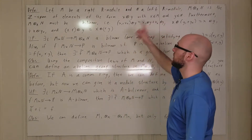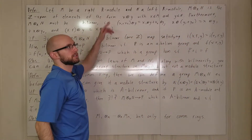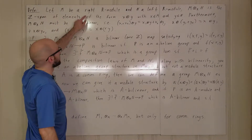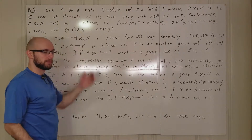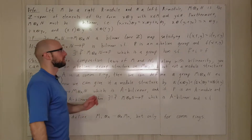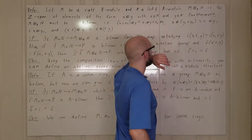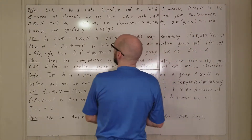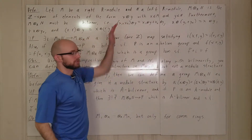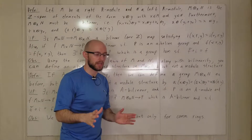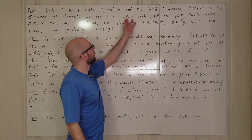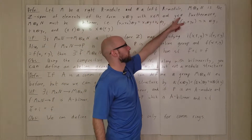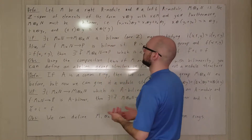So this is tensor products. Let's say R is a general ring — we aren't going to assume commutativity, at least not yet. Let M be a right R-module, so you take things in M and multiply them on the right by elements in R. And N is a left R-module. We're going to define the tensor product of M and N with respect to R, written M ⊗_R N. It's the integer span of elements of the form x ⊗ y, where x comes from M and y comes from N.